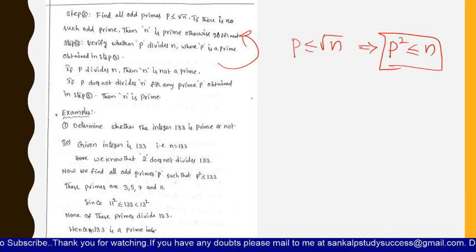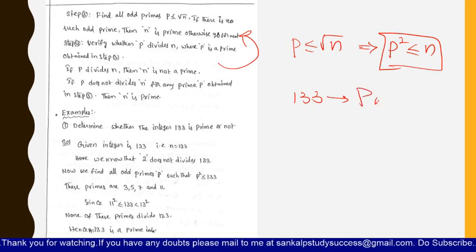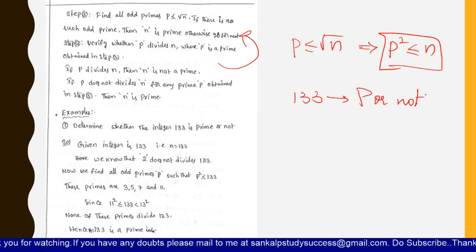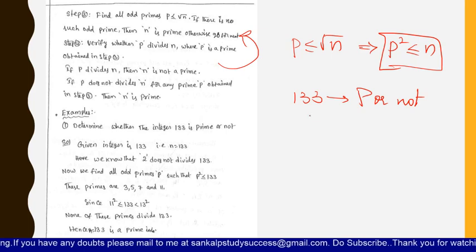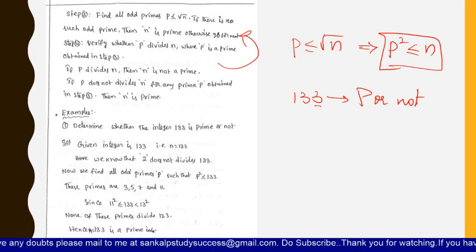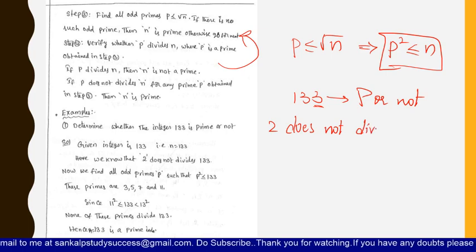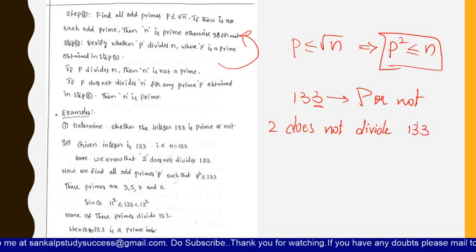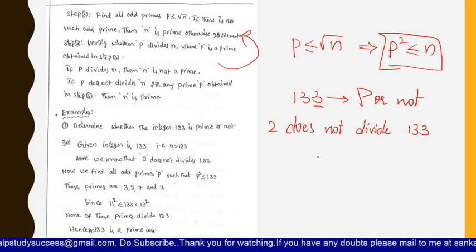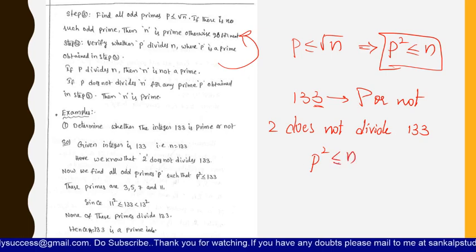Let us test whether 133 is prime or not. The first step is to check whether 2 divides 133. By the divisibility rule of 2, the last digit is 3, so 2 does not divide 133 — 2 is not a factor of 133. We proceed to step 2: find all odd primes p such that p squared is less than or equal to n, here n equals 133.